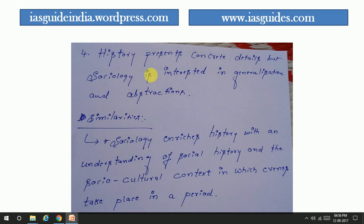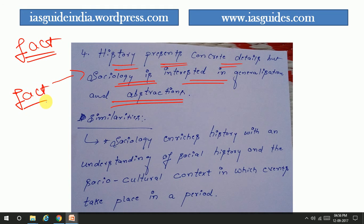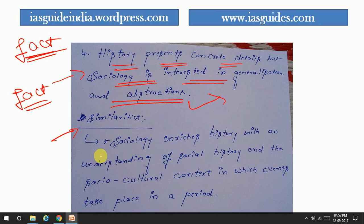The fourth difference is that history presents concrete and fact-oriented details, whereas sociology is interested in generalization and abstraction. History is 100% fact-oriented, while sociology generalizes and deals with abstractions.